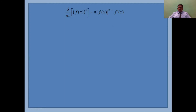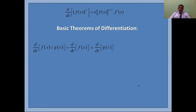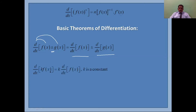Another important formula is the chain rule: d/dx of [f(x)]ⁿ equals n times [f(x)]^(n−1) times f′(x). This is similar to the basic power rule d/dx of xⁿ = n·xⁿ⁻¹, where the derivative of x is 1. For basic differentiation rules: when two functions are added or subtracted, you apply differentiation to each separately. Also, a constant can be taken outside the differentiation operator.